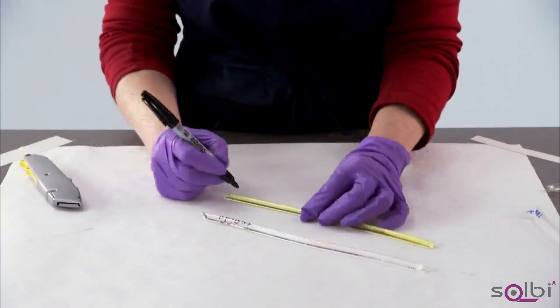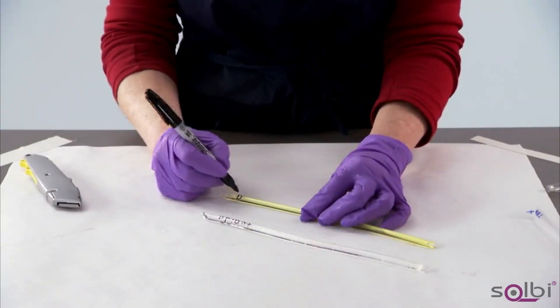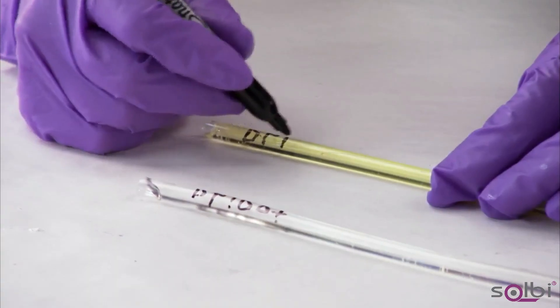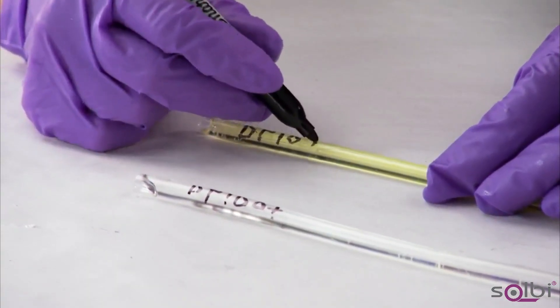You can again mark the samples if needed to identify them. Note that the DP100 may have a slight yellowish tint.